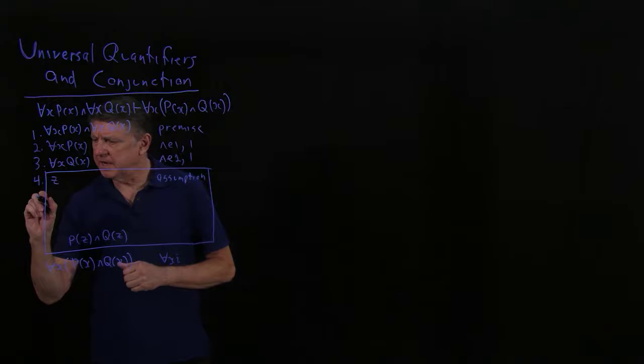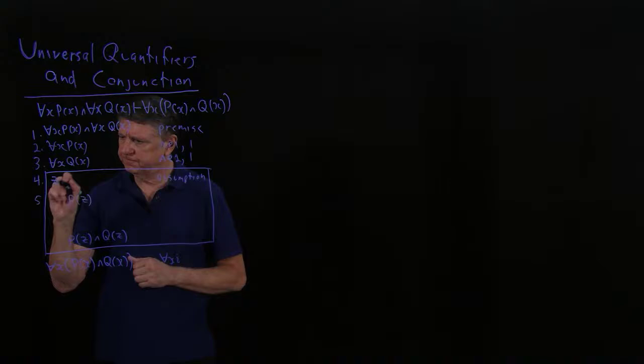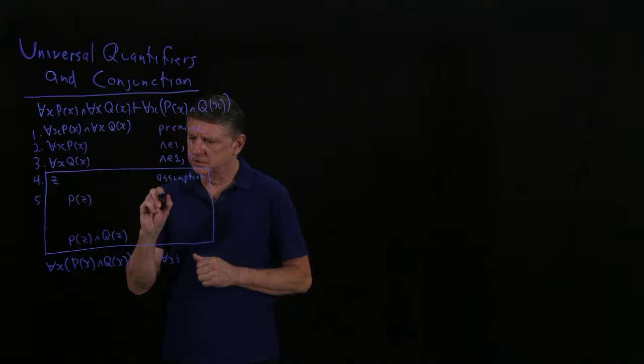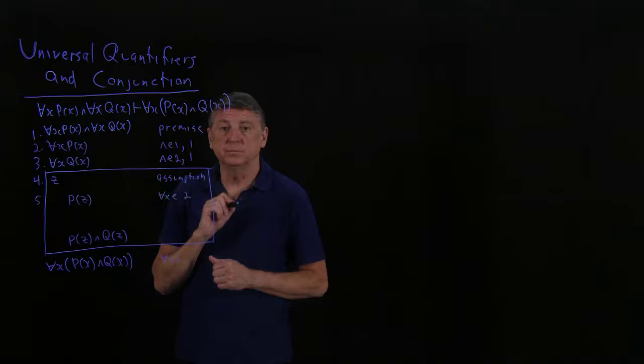That would be line 5. And that would be asserting that this new variable has property P. And that would come from, that would be universal elimination based on line 2.